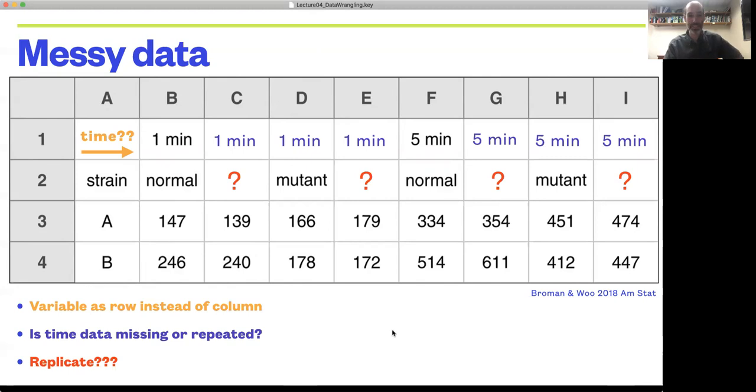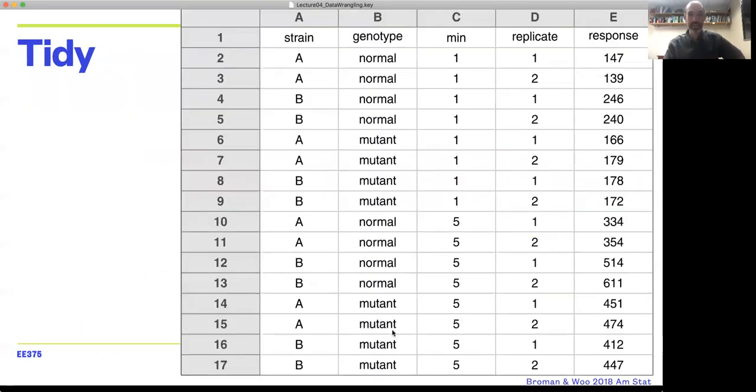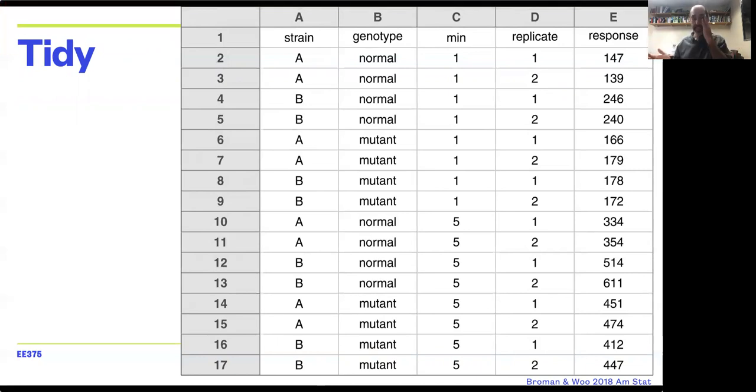Here's the same data set now reorganized in a tidy format, where each variable is a column, each observation is a row, and we have that tidy format. One thing that's notable about the tidy format is it's one of those things that seems obvious once you've seen it and it's explained.